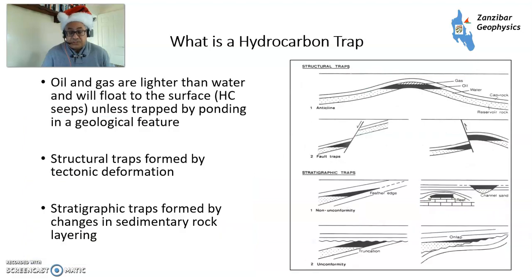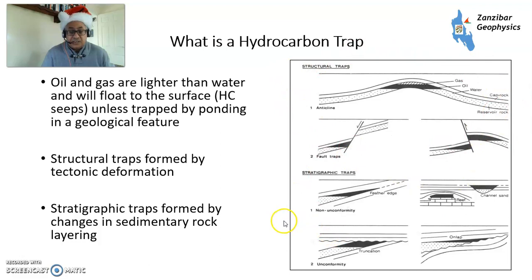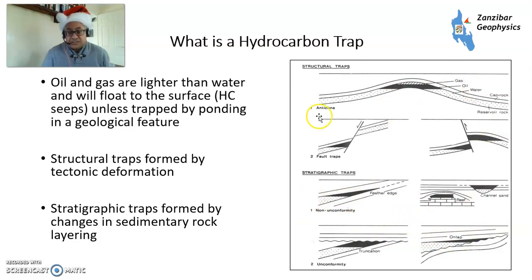So what is a hydrocarbon trap? Oil and gas are lighter than water, and they'll float to the surface and form hydrocarbon seeps unless they're trapped by ponding in a geological feature. There are two basic types of traps: structural traps, formed by tectonic deformation, which I'll talk mainly about; and stratigraphic traps, formed by changes in sedimentary layering. Stratigraphic traps are a little bit harder to understand because of more complexity, so we'll focus on structural traps.